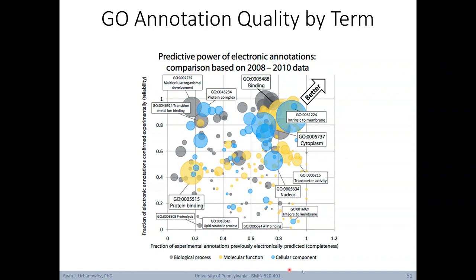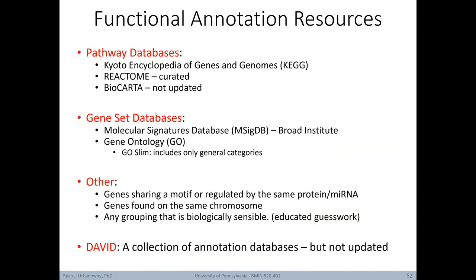Notice that the color of the circles corresponds to the three sub-hierarchies found within GO. We'll wrap up this discussion of functional annotation by describing some other resources you can use to do it. For example, there are different pathway databases, including KEGG, Reactome, and Biocarta. There are gene set databases. For example, in addition to gene ontology, we have the Molecular Signatures Database or MSigDB. But there are also other resources out there that annotate based on genes sharing a motif or being regulated by the same protein or microRNA, or genes found on the same chromosome. At the end of the day, any grouping that's biologically sensible could be applied to conduct functional annotation. Lastly of note, there's this resource, DAVID, which is a collection of annotation databases. However, the last time I checked, this is not still being updated regularly.